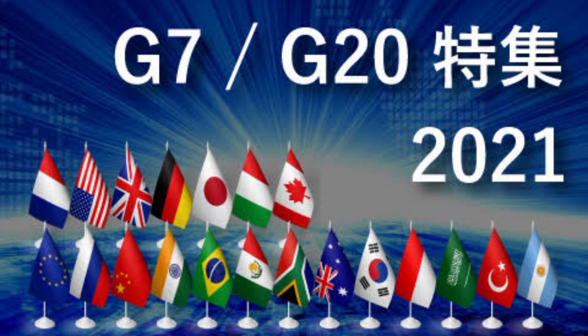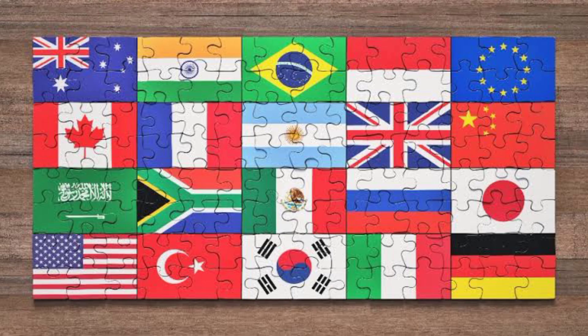The G7 was initially formed in 1975 as the G6, consisting of the United States, Japan, Germany, France, the United Kingdom, and Italy. Canada joined in 1976, and since then the group has been known as the G7.